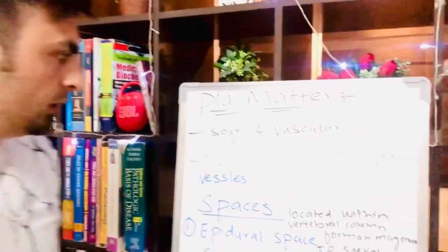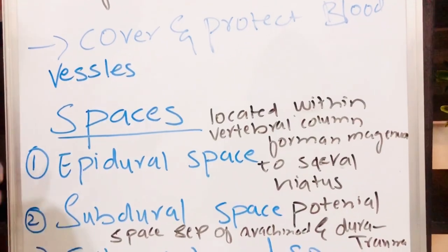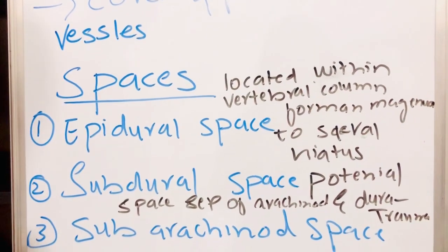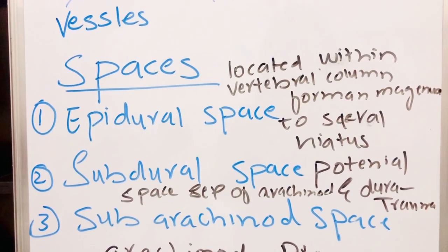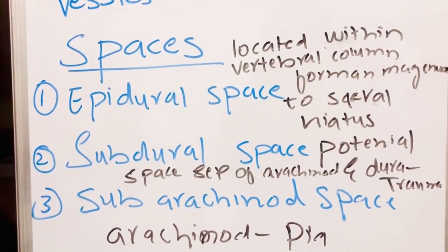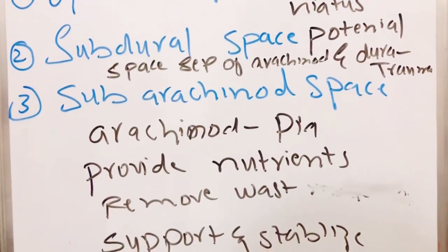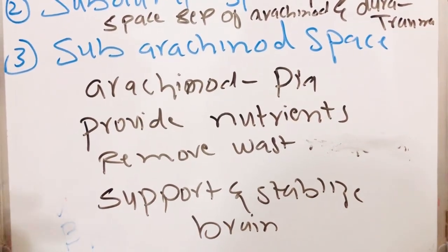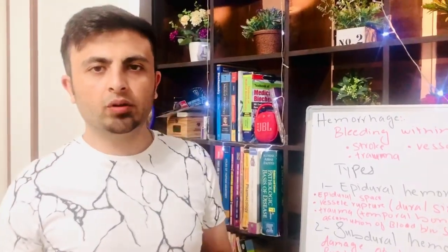We have different spaces to identify. First, the epidural space, located within the vertebral column from the foramen magnum to the sacral hiatus. The subdural space is a potential space created due to trauma. Next is the subarachnoid space, which is the space between the arachnoid mater and the pia mater. Its function is to provide nutrients, remove waste, and help support and stabilize the brain.